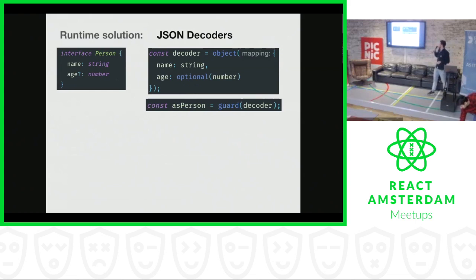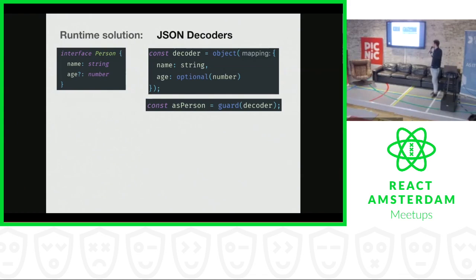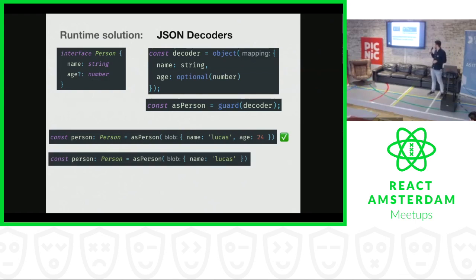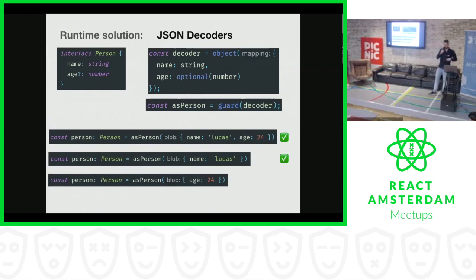So going back to the interface I showed previously — it's represented in a decoder as shown on the right. It's checking whether the decoder is an object — it has a name of type string and an age of type optional. Some examples: if I put in a JSON payload with name Lucas and age 24, it will be successful. If you just put in the name, it will also be okay. But if I don't put the name, which is required, it will throw an error saying the property name is missing.